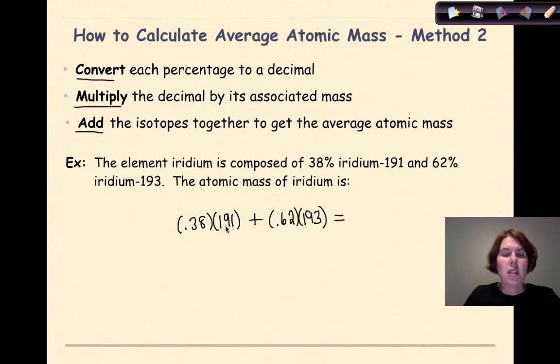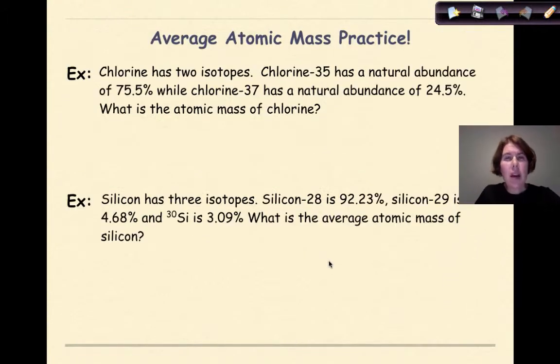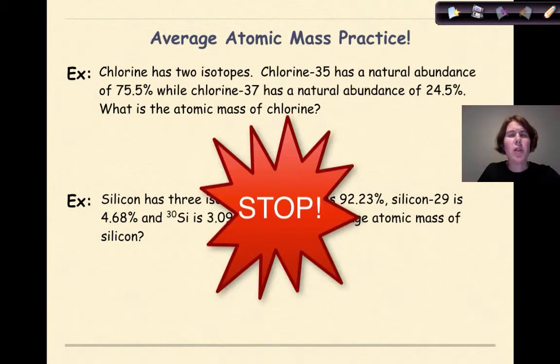And if I work that out, if I do the decimal times the mass for the first one, I should get 72.58. Then if I take the next one, 0.62, and multiply it by 193, I should get 119.66. So I'm going to do that. So 0.38 times 191 gives me this number, and 0.62 times 193 gives me this number. So now all I'm going to do is add these two together, and I should get the exact same answer that I did from method one, that being 192.24. And that's how you use the second method. Now it's your turn to practice. So what I want you to do is stop, do the two examples on your own, and then check your work with me.